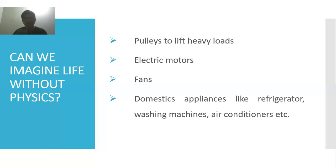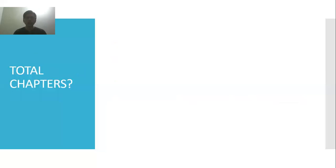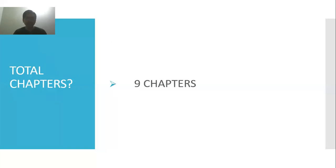Now we will talk about the total chapters we are going to discuss in class 9 physics — what is the syllabus for the AKU curriculum. There are a total of nine chapters. We will study nine chapters and the paper will come from these nine chapters. We will start with chapter one and move through chapter two, three, four, up to chapter nine.